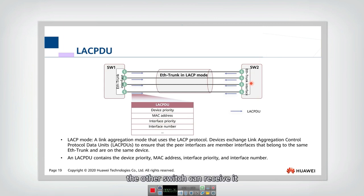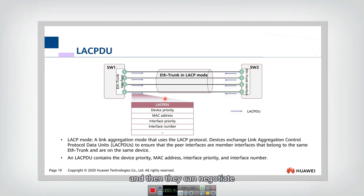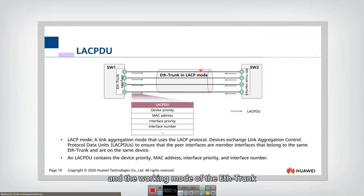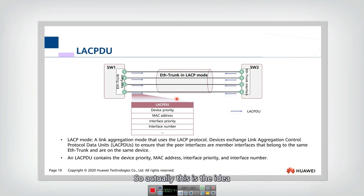A lot of information should be included in the LACPDU. When the messages are transmitted, the other switch can receive them and can send back some LACPDUs. Then they can exchange information and negotiate on the number of links and the working mode of the Ether trunk. This is the idea for the LACPDUs.